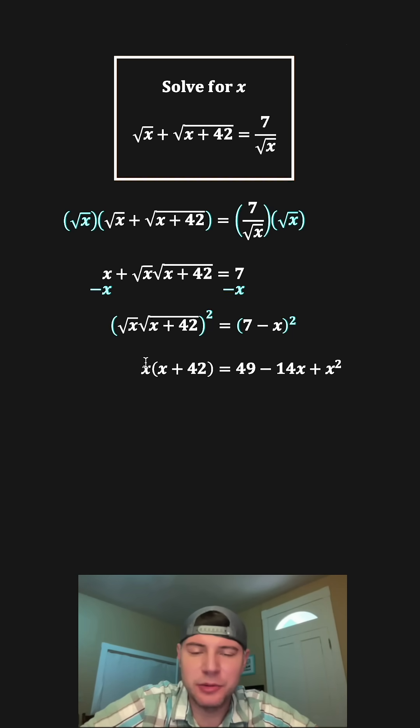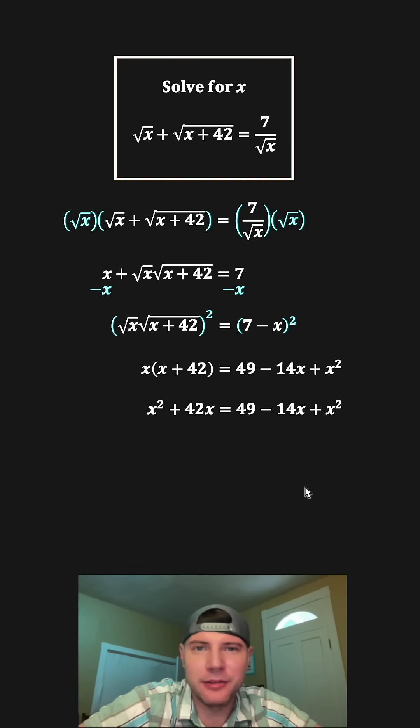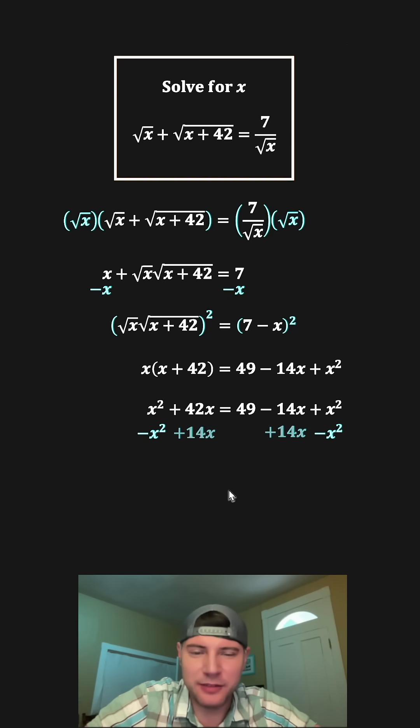Next, on the left-hand side, we can distribute this x to both of these terms. That gives us x squared plus 42x, and then we can bring down the right-hand side. From here, we have an x squared on both sides of the equation, so let's subtract x squared from both sides. And then I want to get all the x's on the same side, so let's add 14x to both sides. On the left-hand side, these x squares cancel, and then 42x plus 14x is 56x. And then on the right-hand side, all this stuff cancels, so we have 49.